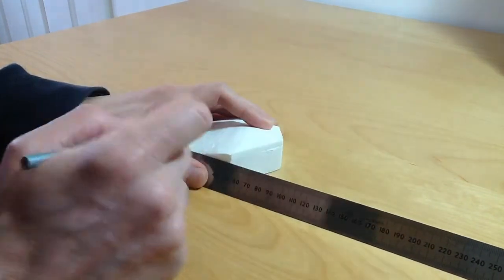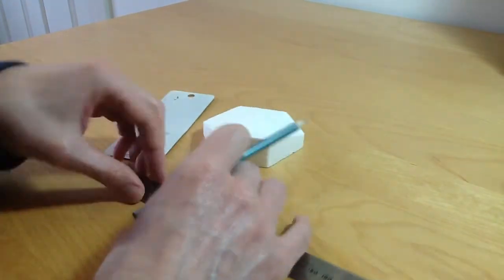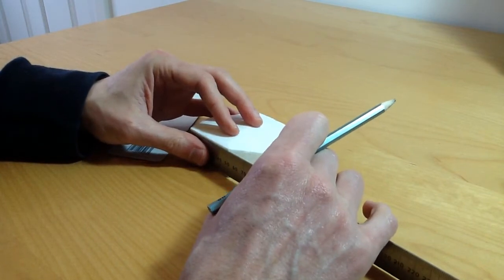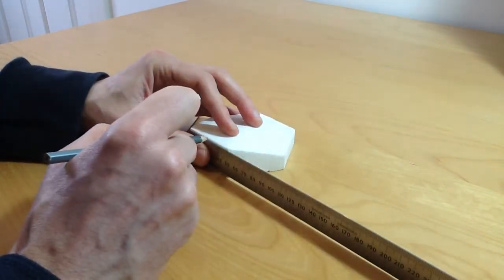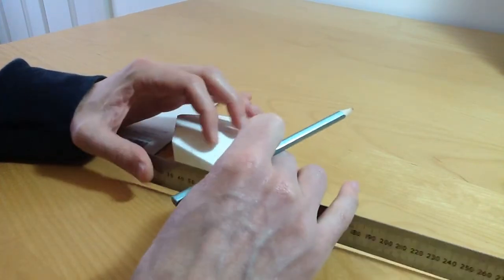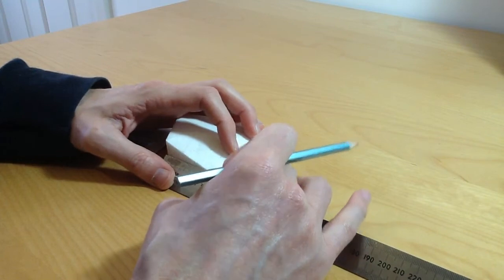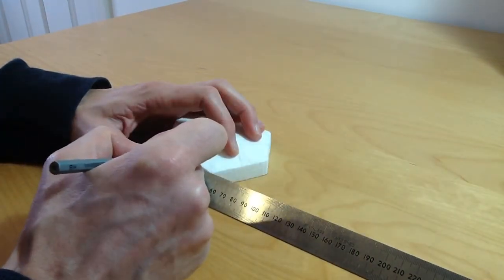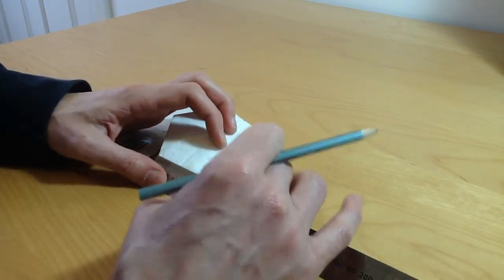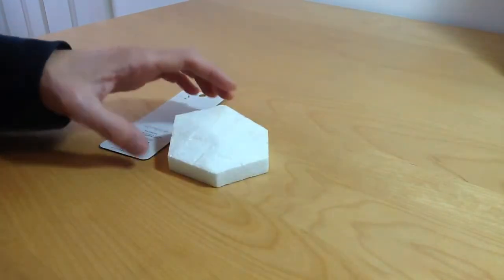I'll put this on the flat and mark my 25mm there. If you're going to be doing a lot of this, you can have shortcuts. You can have a little template where you can mark this out quite quickly, but the principle's the same.